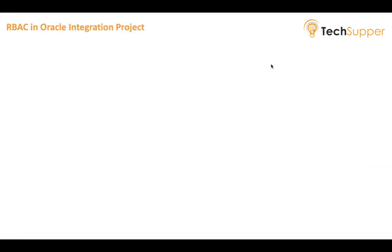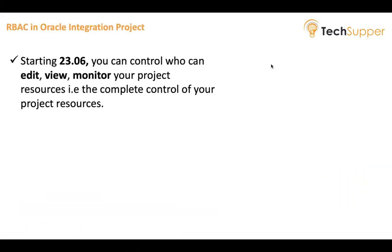What is RBAC? Resource-Based Access Control is used to restrict resources from being accessed by others based on role and responsibility. To use this RBAC feature, you have to be on version 23.06. Starting from 23.06, you can control your integration resources — who can edit, who can view, and who can monitor your project resources. That is complete control of your project resources.